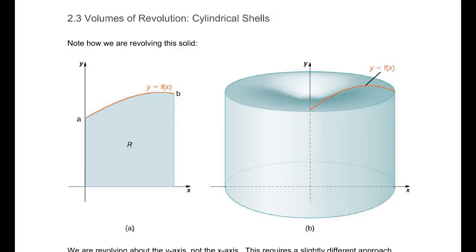Section 2.3, Volumes of Revolution: Cylindrical Shells. This is from OpenStax Calculus, Volume 2, Chapter 2, Section 3. At the bottom of every page you can see a link to where you can actually get the text for free, so make sure you do that so you have something to look at.